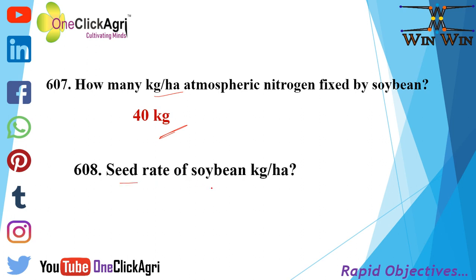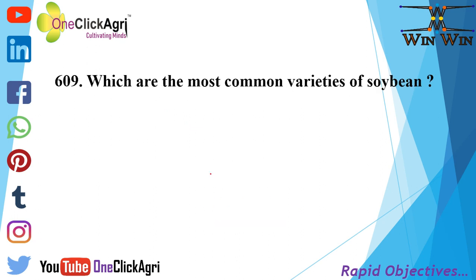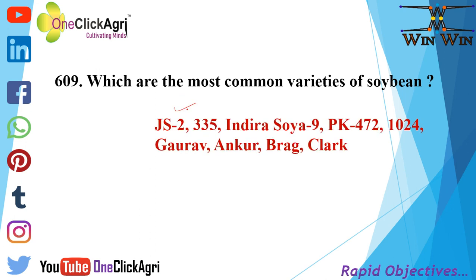Seed rate of soybean is 75 to 80 kg per hectare. The most common varieties of soybean are JS 335, Indira Soy, PK 472, 1024, Gaurav, Ankur, Bragg and Clark.